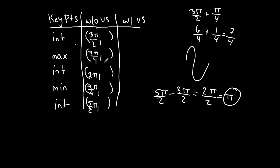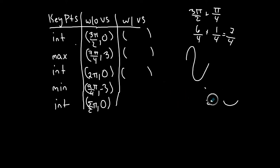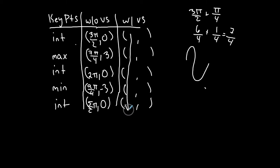For the y-coordinates without the vertical shift: all intercepts are y = 0, the maximum goes up to positive 3 (the amplitude), and the minimum goes down to negative 3. The vertical shift does not affect the x-coordinates — it only moves the function up or down, so those x-coordinates stay the same.